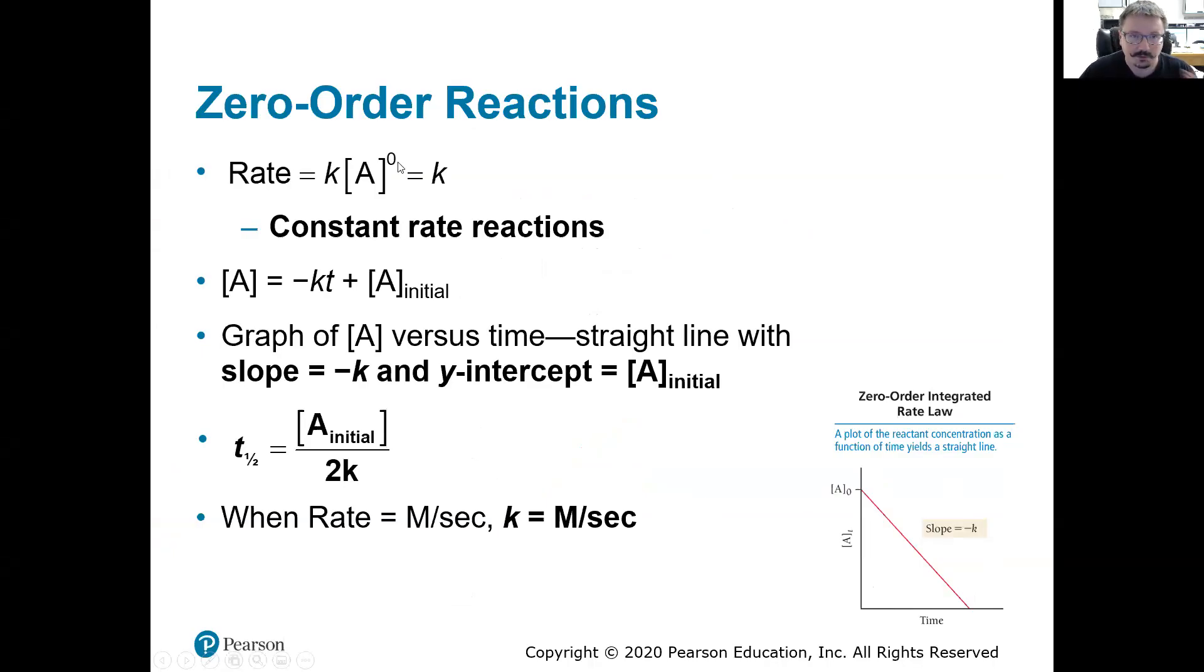So zeroth order with respect to a particular reactant means we shouldn't see any change in rate as we alter that concentration. And here's our graph for zeroth order integrated rate law. For the first order where we needed to plot the natural log of the concentration versus time, for the zeroth order we're just plotting concentration versus time. And it gives us a straight line plot. So if we get all of our rate data and we plot the change in concentration over time, or we plot what the concentration is versus time, we should see a straight line plot. If we do, we know it's zeroth order. If we don't, we don't necessarily know if it's first or second order, but we do know it's definitely not zeroth order.